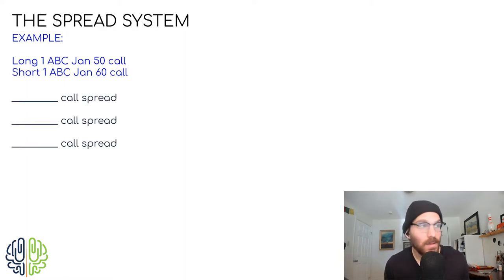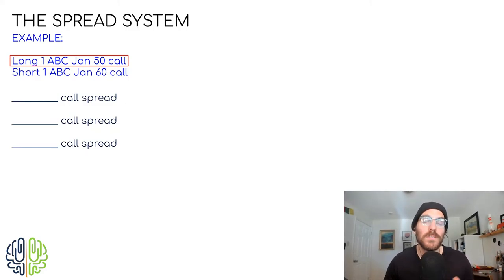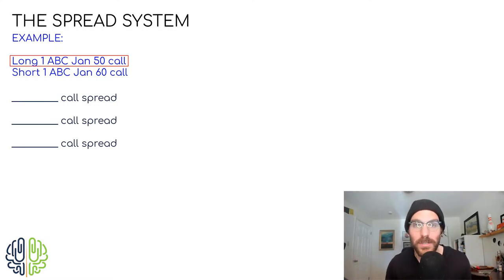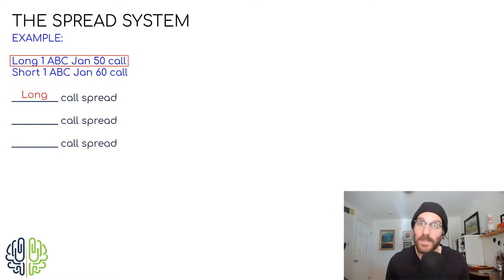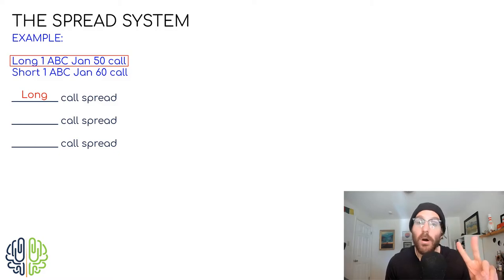We know we have a call spread here, and if we know that our 50 call is the dominant side because it has the lower strike price and is the more valuable option, that will determine the overall sentiment of the spread. If the long side is the dominant side, then we refer to it as a long spread — specifically, this is a long call spread. A word association that I think is really helpful: the word long and the word debit always go together. So this is also a debit call spread.